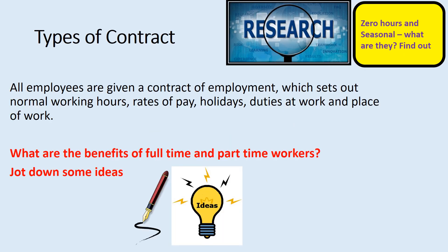Every employee should have a contract of employment from their employer within 30 days of being hired. It sets out working hours, pay, holiday entitlement, duties to perform, and where you will be working. Types of contract include full-time, part-time, zero-hour, and seasonal. Find out what zero-hour contracts and seasonal contracts are — I'll ask you next week.